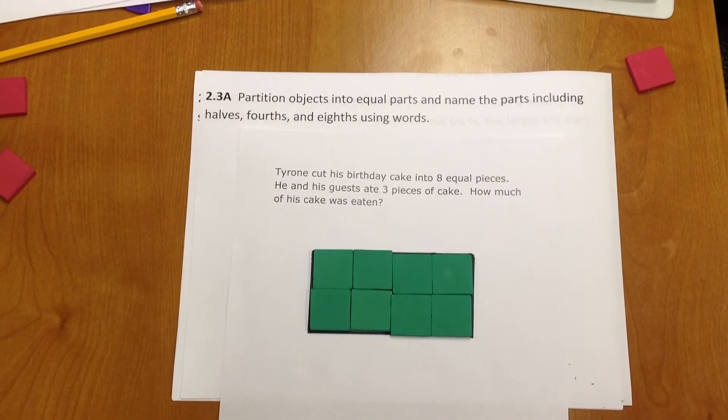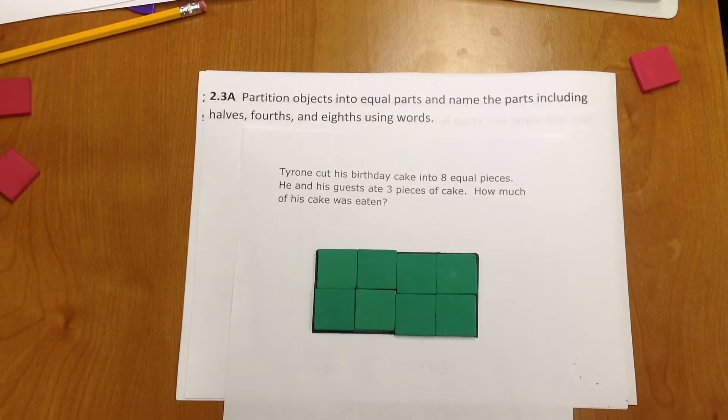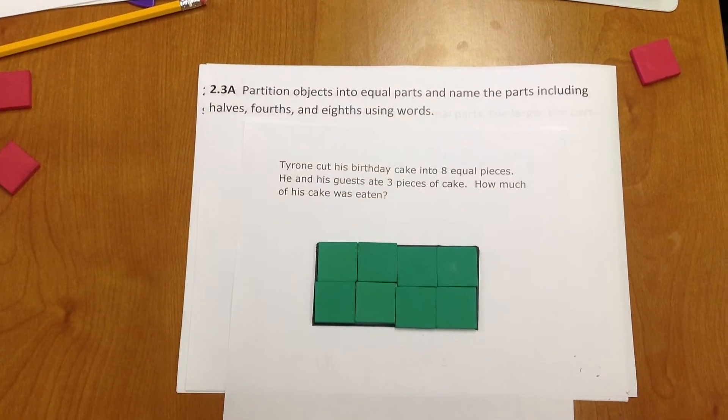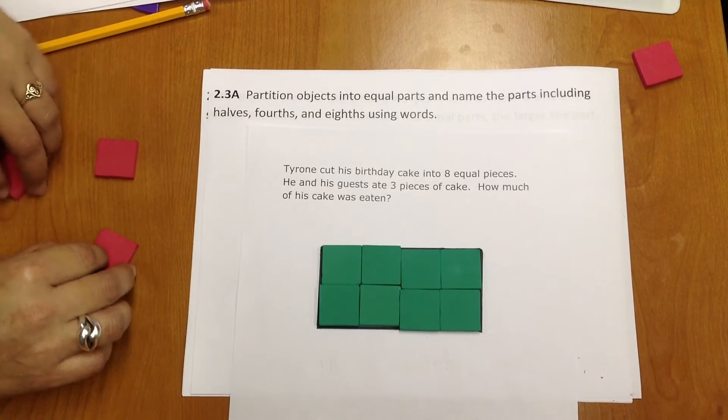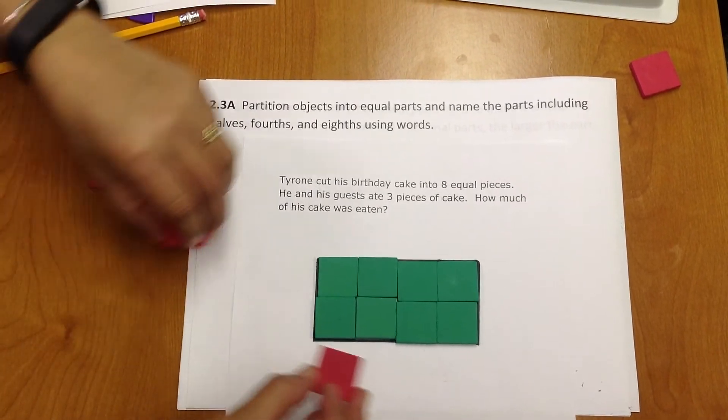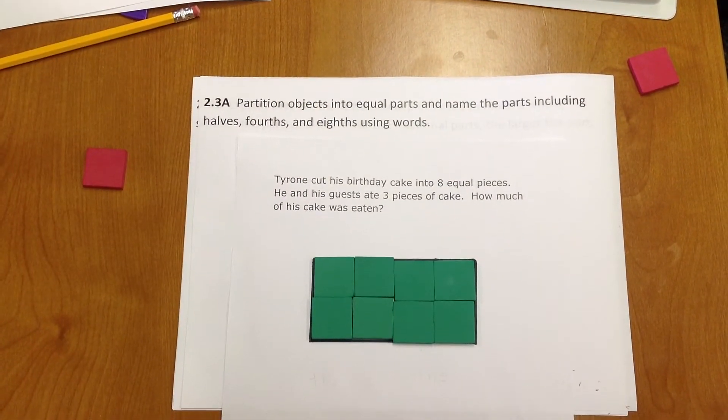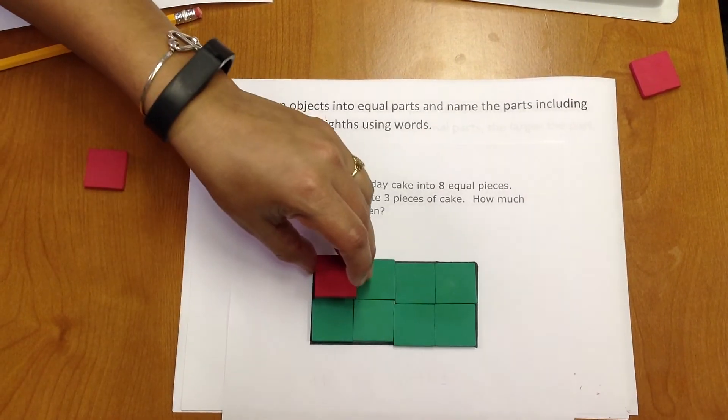Now let's think about how many pieces of cake were eaten. He and his guests ate three pieces of cake. I'm going to use a different color tile to represent the pieces that have been eaten, which are three.